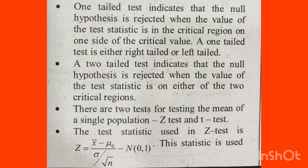This is a one-tailed test. A one-tailed test indicates that the null hypothesis is rejected when the value of the test statistic falls in the critical region on one side of the critical value. A one-tailed test is either right-tailed or left-tailed — it is not symmetrical.